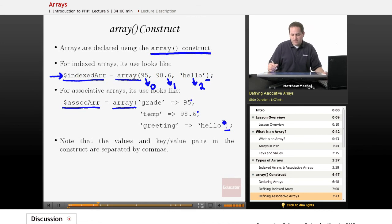And instead of using the default numeric keys that get associated with it, we're actually naming the key we want to associate with each piece of data. So for example, we're using the string grade to refer to 95. Maybe that represents a grade on a test. We're going to use the string temp to refer to the temp 98.6. And maybe we have a string that's going to be a greeting, and so we'd reference that with greeting.